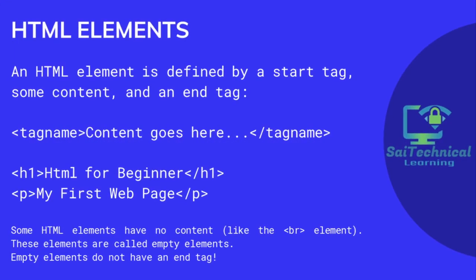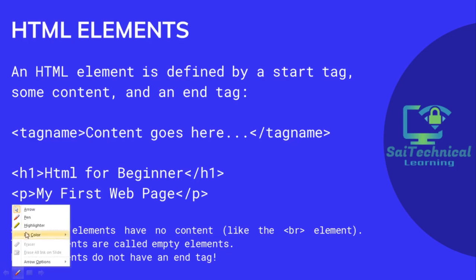An HTML element is defined by a start tag, some contents, and an end tag. The start tag consists of an opening bracket, the tag name, then a closing bracket. In between that we place the contents, and then we need to close that particular tag.